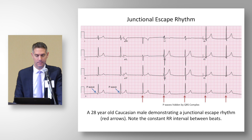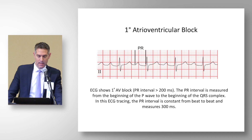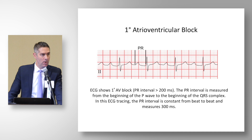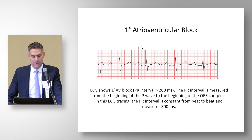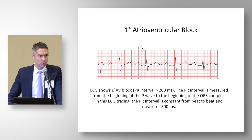First degree AV block is also a normal finding in athletes, represented by a PR interval greater than 200 milliseconds, measured from the beginning of the P wave to the beginning of the QRS complex. In this particular figure it's about 300 milliseconds. In our criteria set, a PR interval up to 400 milliseconds would be considered a normal finding in the absence of symptoms.